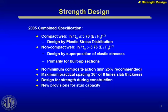As I mentioned earlier, 25% composite action is a minimum suggested. It's not a requirement of the specification. We don't like to go down even that low. I like to keep them more like 50%, but just be aware that the smaller percentage of composite action, the harder you're working those studs, and if you lose one or two of them, it becomes a little bit more problematic.